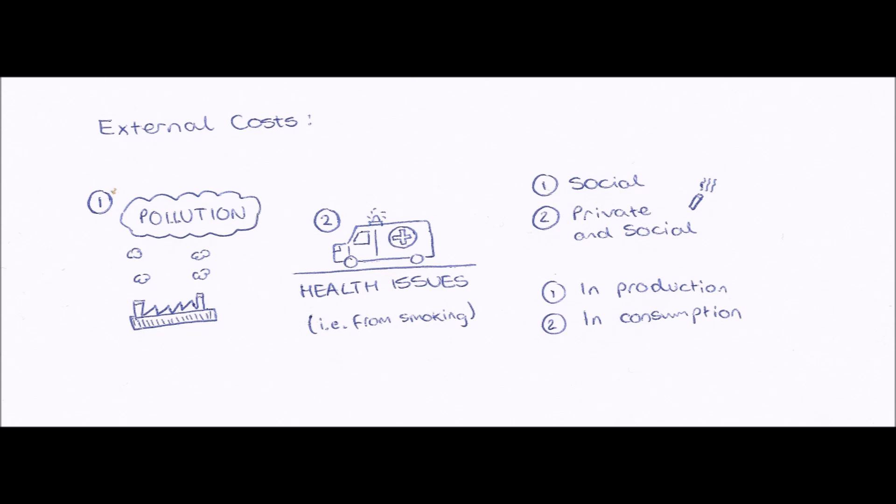Because when the air is polluted, this air is breathed in by everybody, so it has a negative impact on everybody in society. So it is a social external cost. Also, number one, pollution, is an external cost from production. So factories, when they produce goods, they pollute. They pollute carbon dioxide and things out of their huge factory chimneys. So this is an external cost from production.